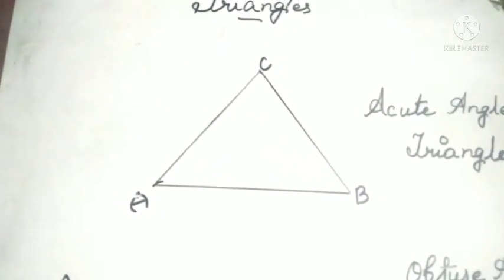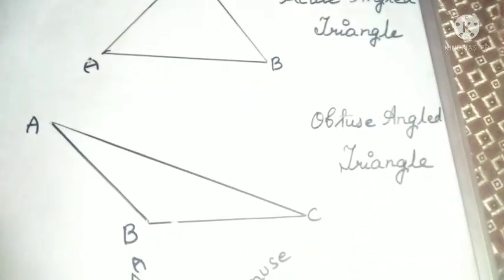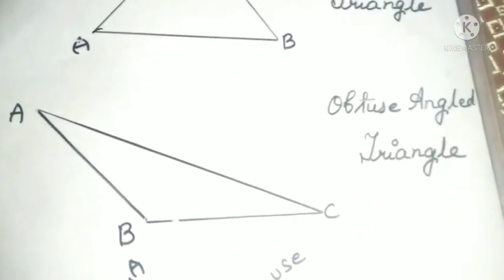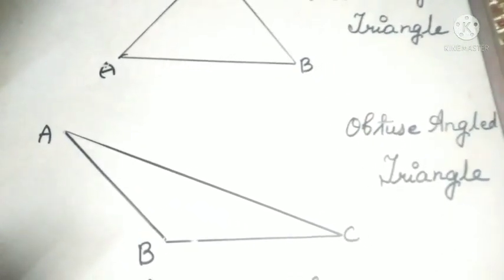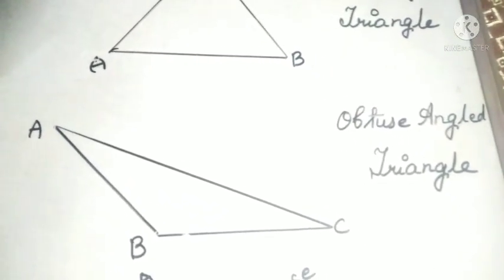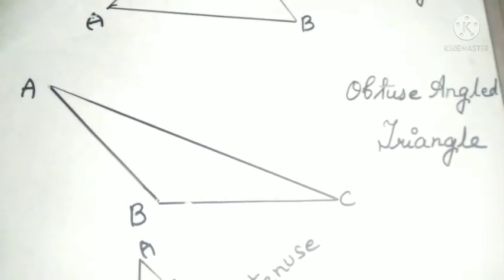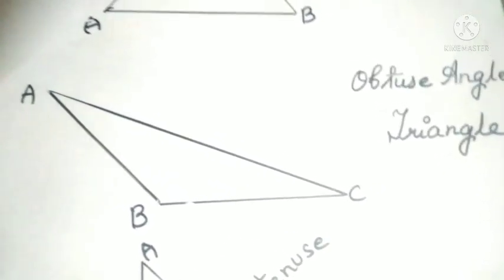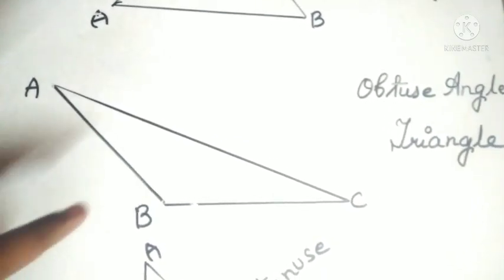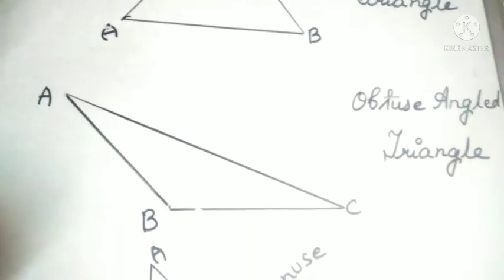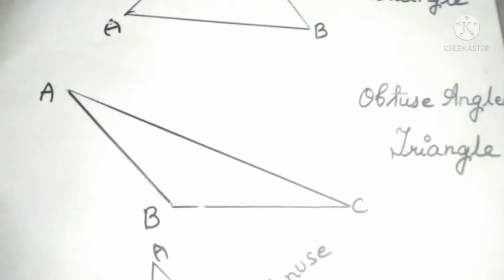Now we are going to learn what is an obtuse angled triangle. A triangle whose one angle is obtuse is known as an obtuse angled triangle. Triangle ABC is an obtuse angled triangle as angle ABC is obtuse.